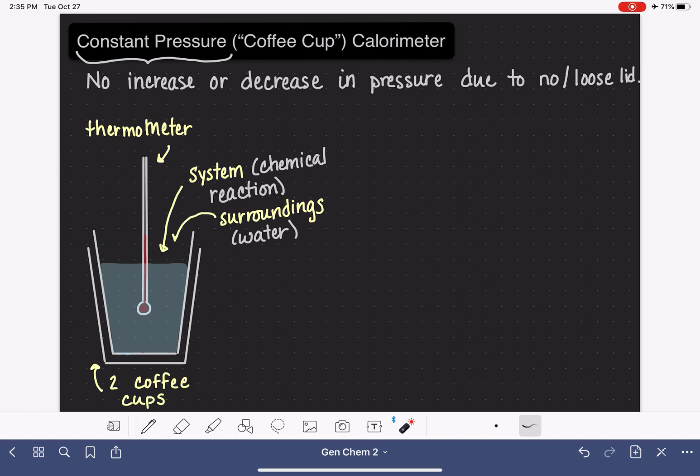Now the premise or the main concept in coffee cup calorimetry is that all of the heat that is given off or absorbed by this chemical reaction is exchanged with the water inside of this coffee cup. Let's say that this chemical reaction is an exothermic reaction, so it's giving off heat.